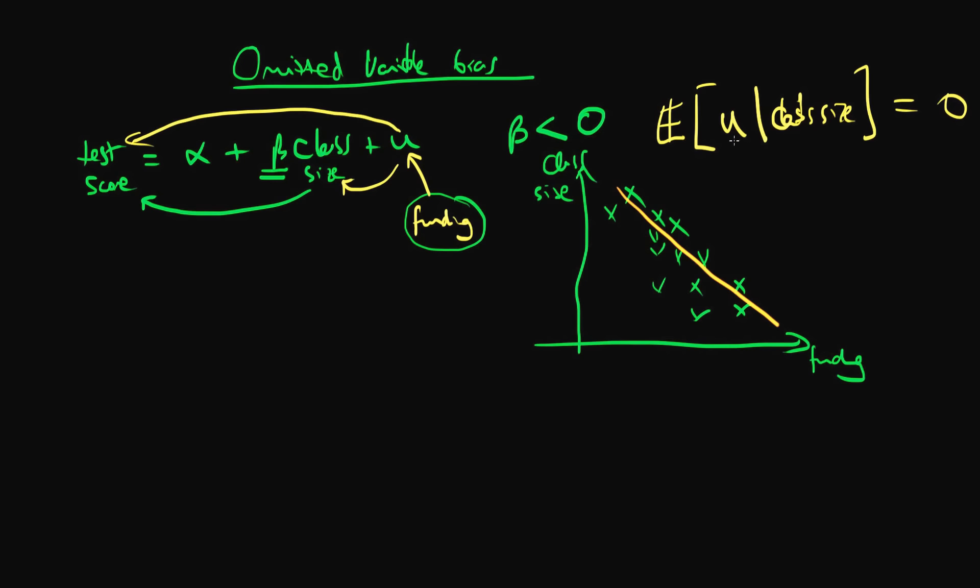This means that the expectation of our error given class size is likely not to be zero. And we can see that because this issue, stated another way, is that the covariance between the error and class size has got to be equal to zero.